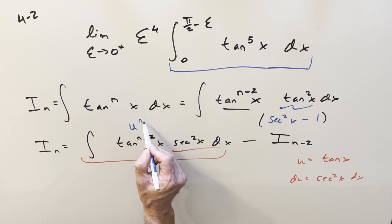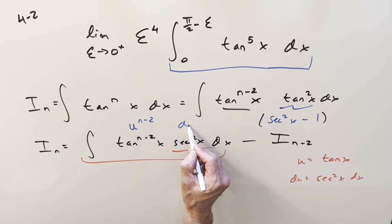So if this is going to become u n minus 2 du, then it's just going to be power rule. So let's see what we have. When we integrate it, we're going to get u adding 1 to the exponent, u n minus 1 over n minus 1 minus this i n minus 2.